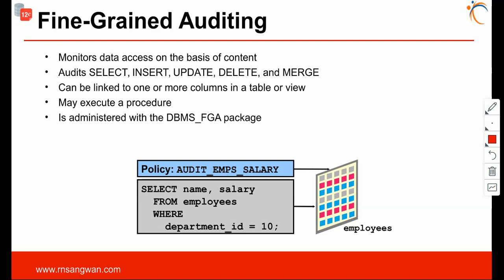Fine-grained auditing provides more detail — auditing a specific user, specific record, or specific issue. It is in-depth auditing, as opposed to the broader, generic approach of standard auditing. For example, if anybody changes employee ID 100, you want to monitor just that, not the entire table. You monitor data access based on content — SELECT, INSERT, UPDATE, DELETE, or MERGE statements can all be audited. It can be linked to one or more columns in a table or view and is administered with the DBMS_FGA package.